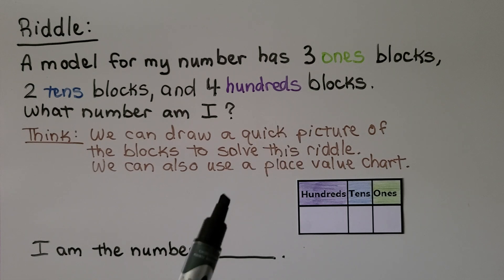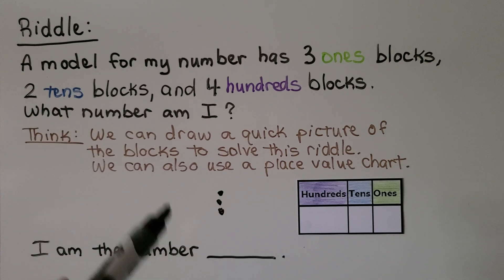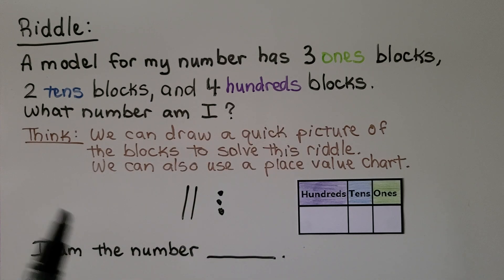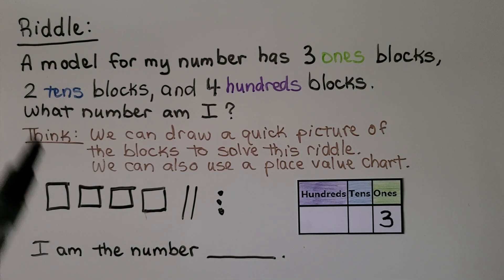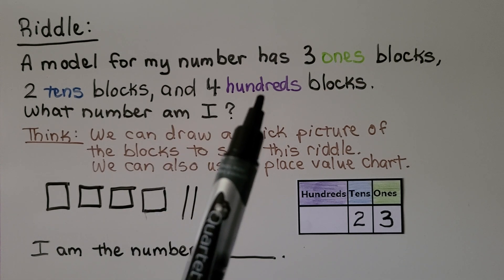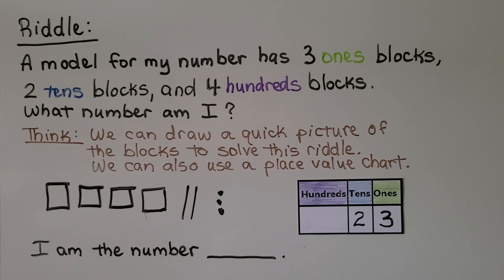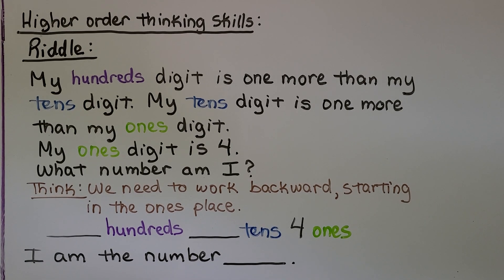There are three ones, so we make three dots. There are two tens, so we make two lines. There are four hundreds blocks, so we make four squares. Using the place value chart: three in the ones place, two in the tens place, four in the hundreds place. The number is four hundred twenty-three — 423.